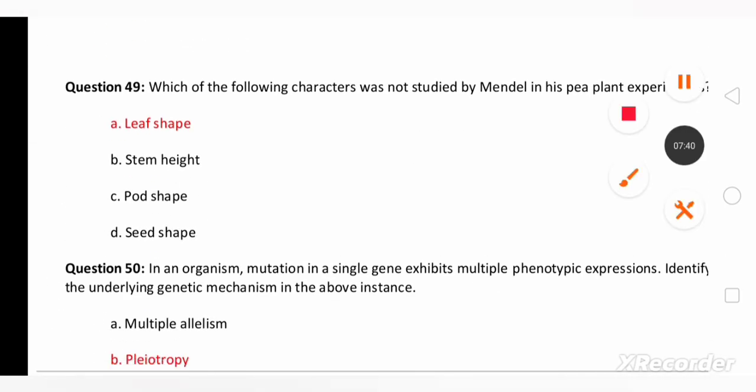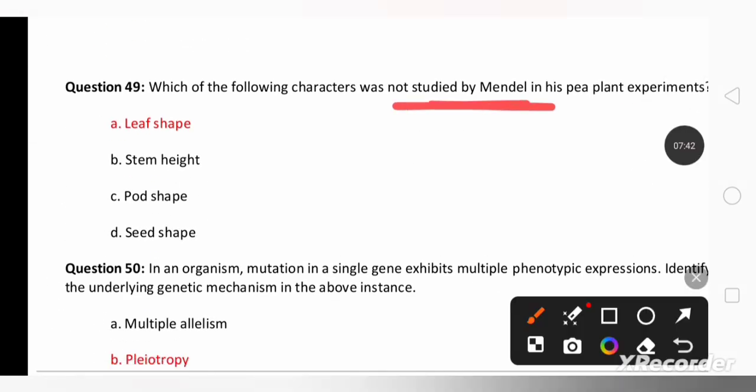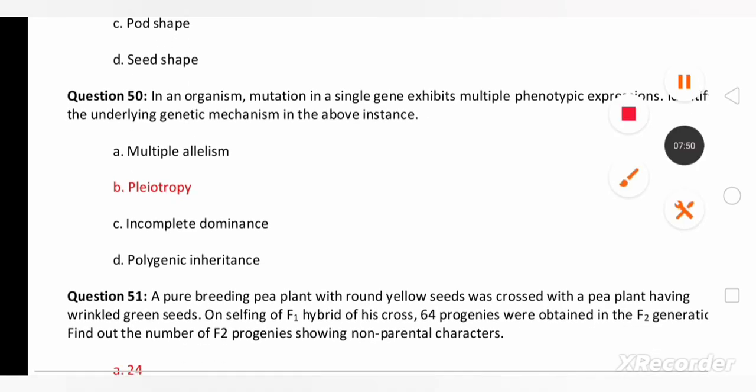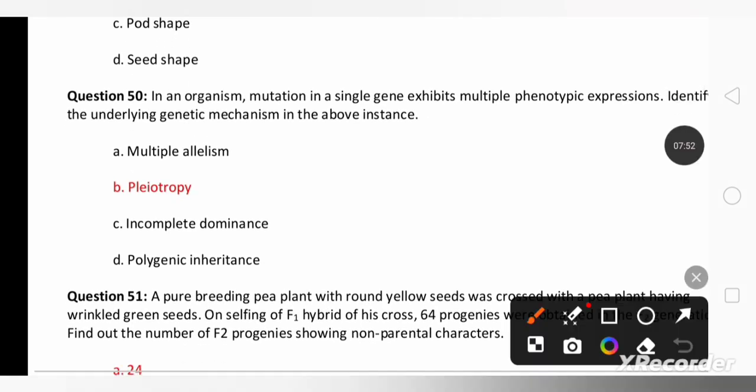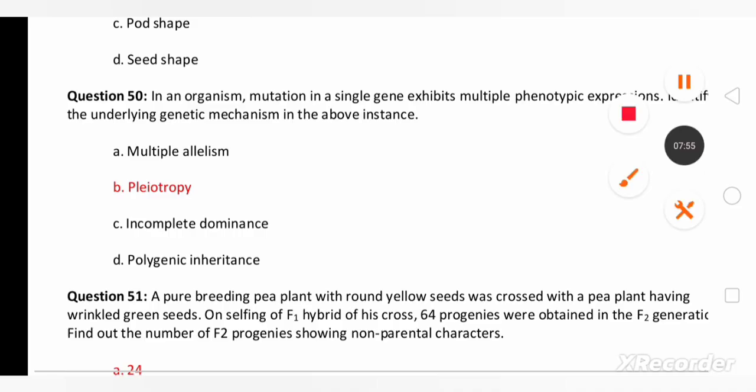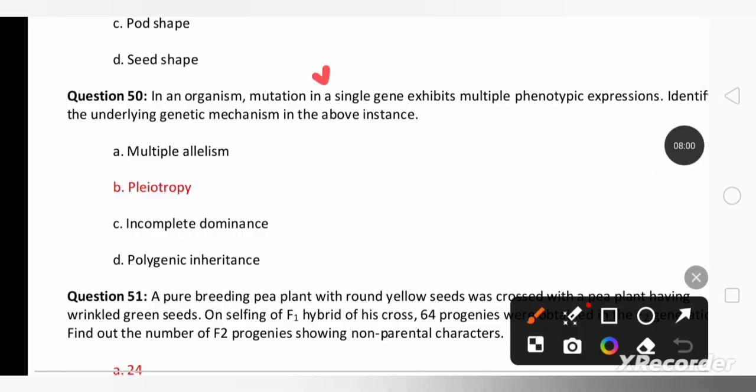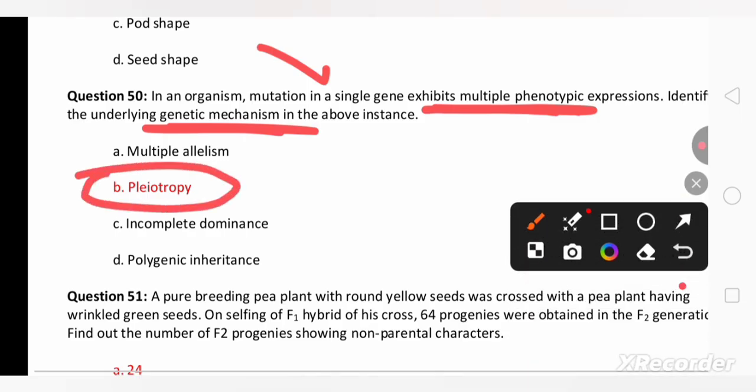Which of the following characters was not studied by Mendel in the pea plant experiment? That is leaf shape, whereas stem height, pod shape, seed shape has been studied. In the organism, mutation in the organism, single gene exhibits multiple phenotypic expression. Identify the underlying genetic mechanism. The genetic mechanism is pleiotropy.